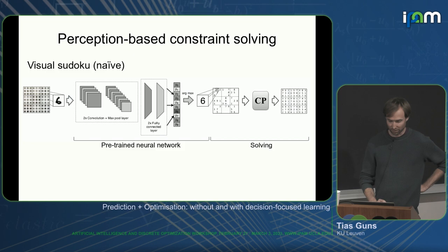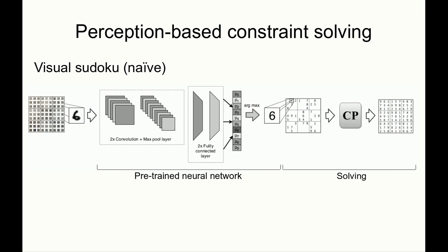Here's an example. Assume that we have some image taken with a camera from a newspaper of a Sudoku. We might cut it into 81 pieces. We have a neural network that predicts for each of the cells what the image represents. You could take a very standard LeNet architecture, have a head that tells you whether it's a number 1 to 9 or whether it's empty. Then you take all of those predictions, take the argmax for each, and give that to a CP solver.